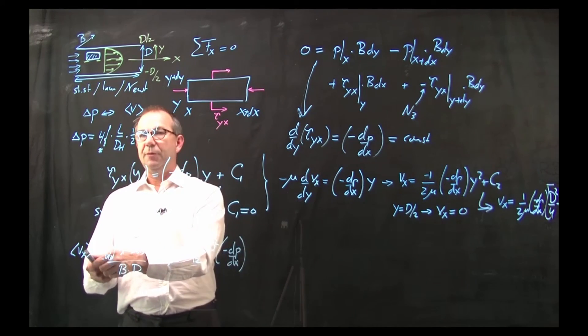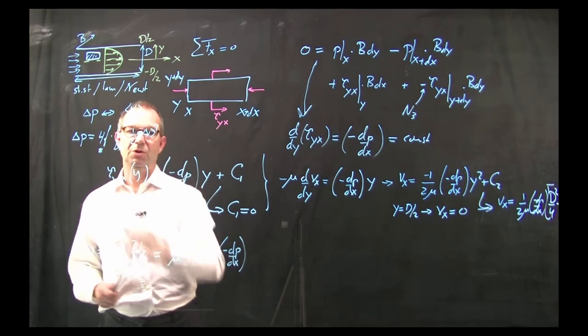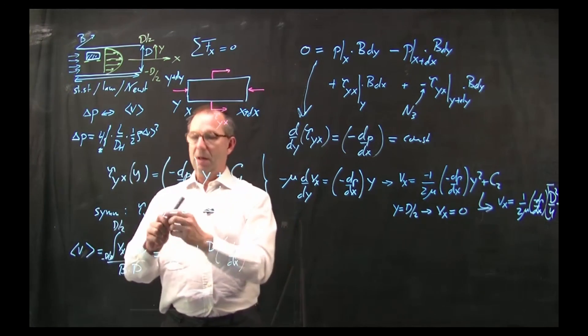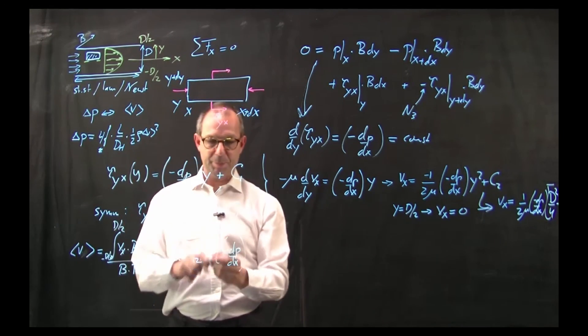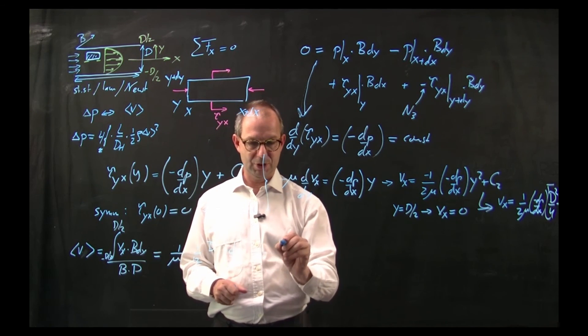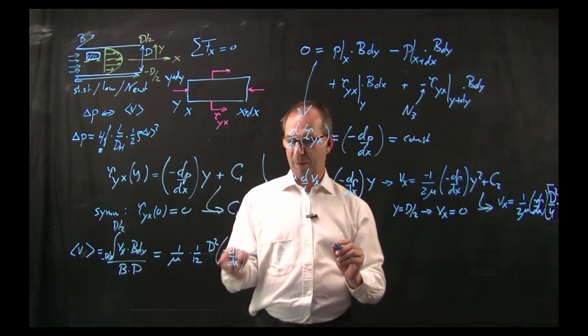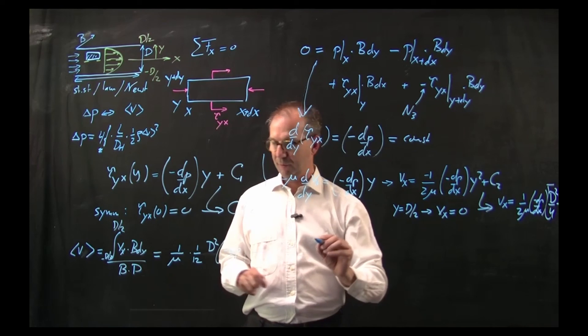I find that this is 1 over mu times 1 over 12 d squared times minus dp/dx. Alright, so I have now the mean velocity and I'll take off this x coordinate to be consistent with this notation.